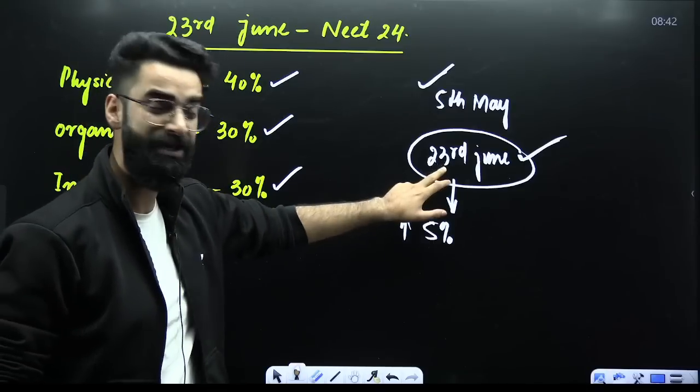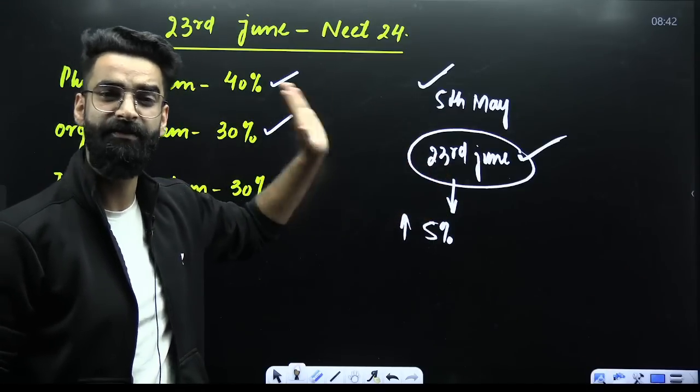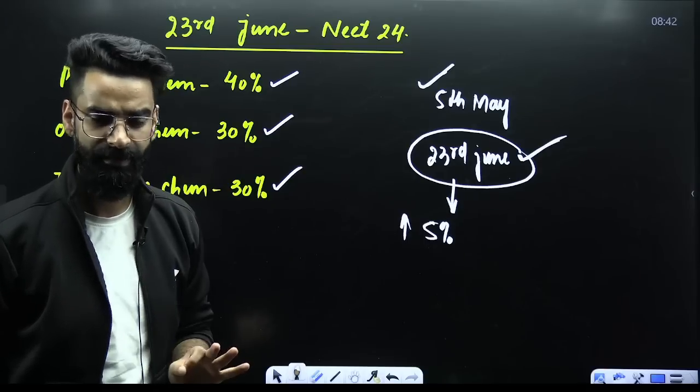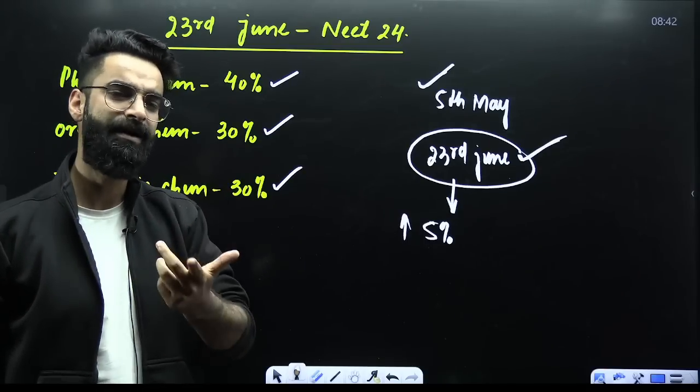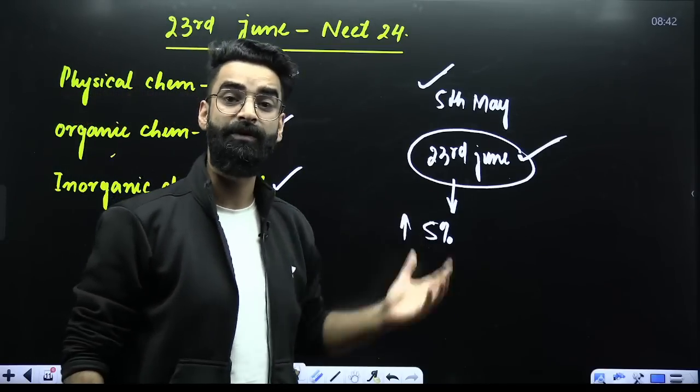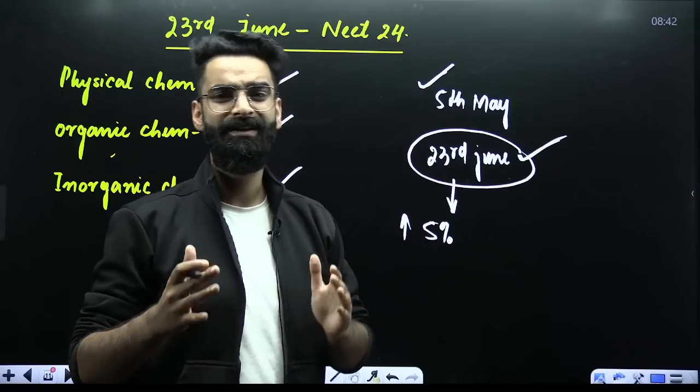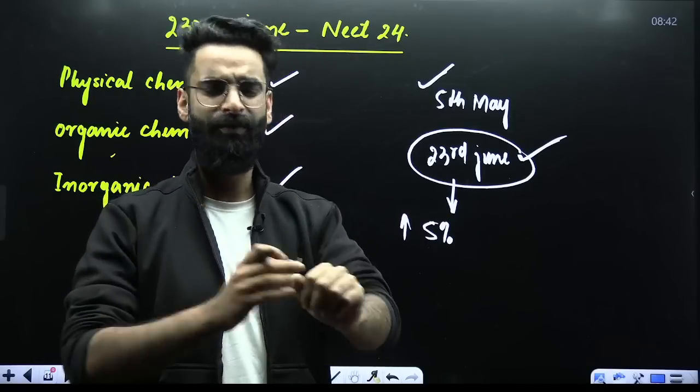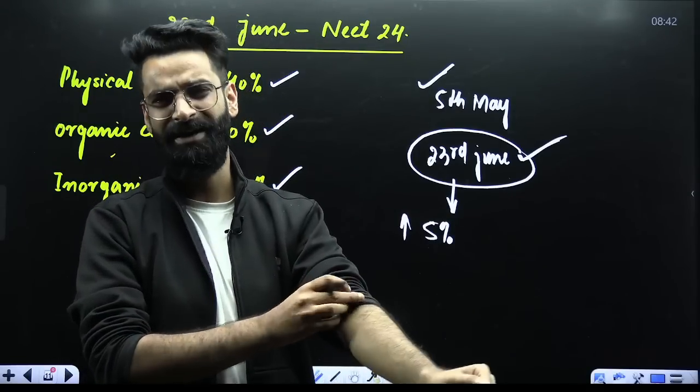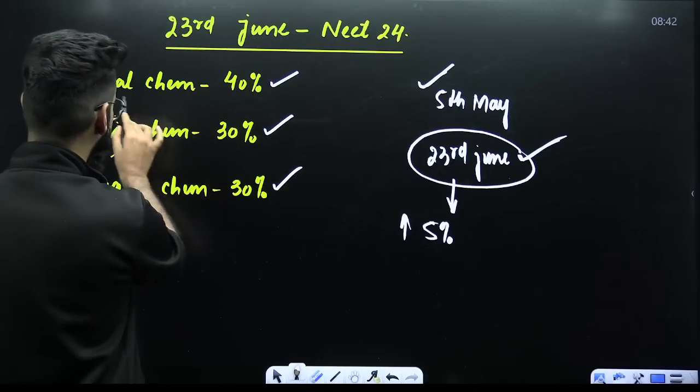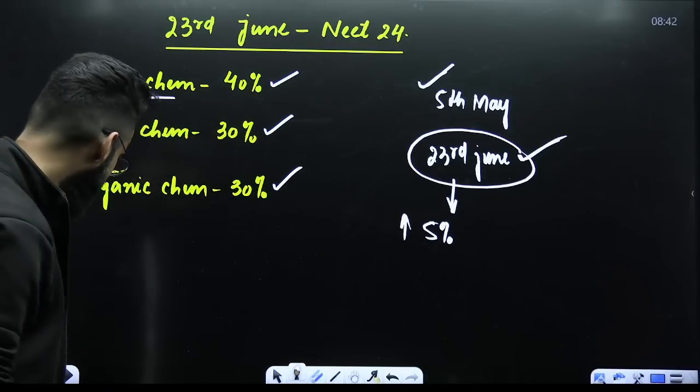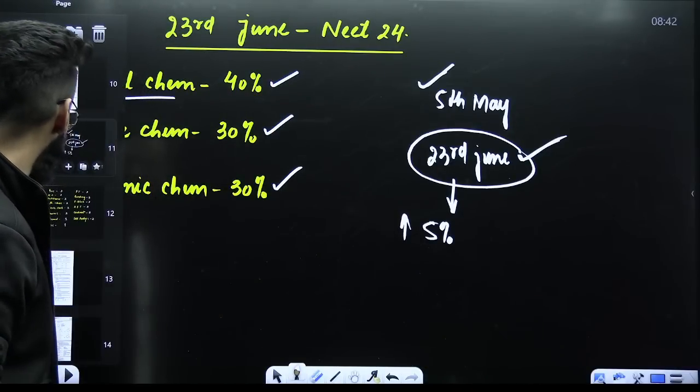Because more questions, first of all, more questions were asked from the physical chemistry part in which calculations were involved. So students would have taken time. They would have utilized time to solve those questions with the help of due to which there would have been issues, there maybe would have been issues on time management basically. Let's have a look what kind of questions were first of all asked from physical chemistry. Let's see one by one so that you get the insights of the things.